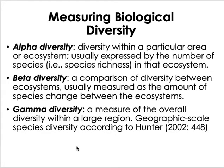In measuring biological diversity, there are different levels: alpha, beta, and gamma. Alpha diversity refers to the number of species, or species richness. Beta diversity involves computing and comparing diversity across different plots and transects using statistical analysis. Gamma diversity operates at the landscape or regional geographic scale, as described by Hunter.